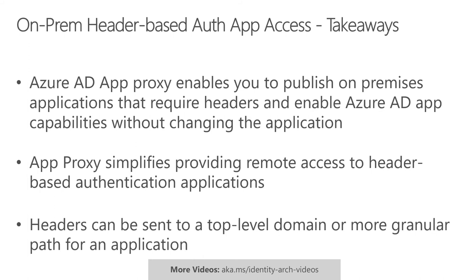The internal to external URL for the App Proxy app also determines the scope of what your application's policies will be assigned to. So you can make this as broad as the top-level domain, like peoplesoft.contoso.com, or publish another app with a more granular path, like peoplesoft.contoso.com/profile, with a more granular access policy. App Proxy will always match your policies to the path that is most specific. If you want to learn more about App Proxy, check out our other videos at aka.ms/identity-arc-videos, posted in the description.